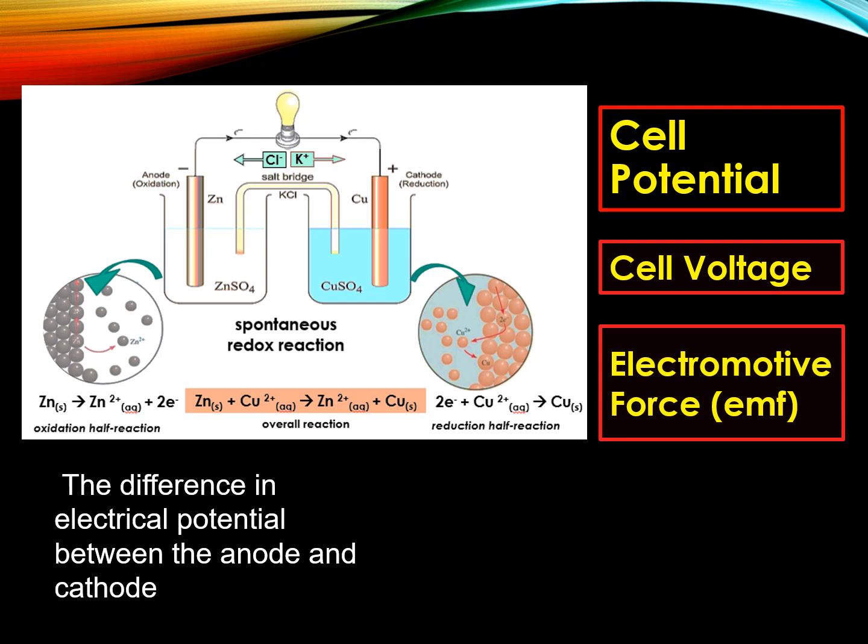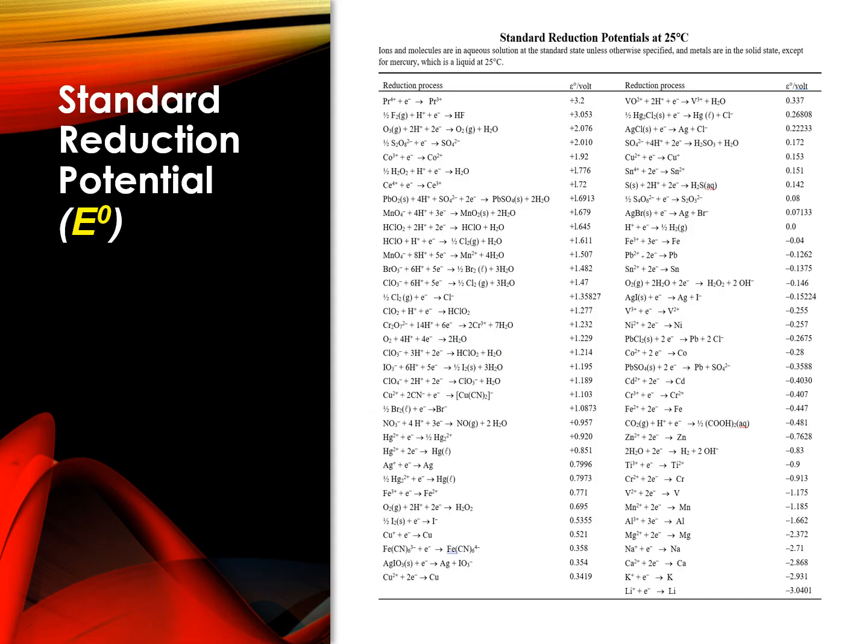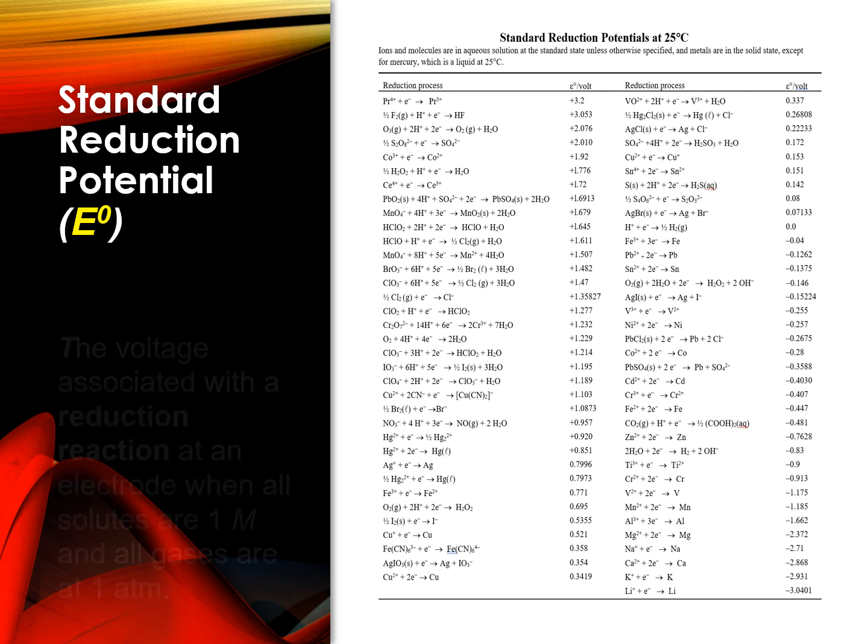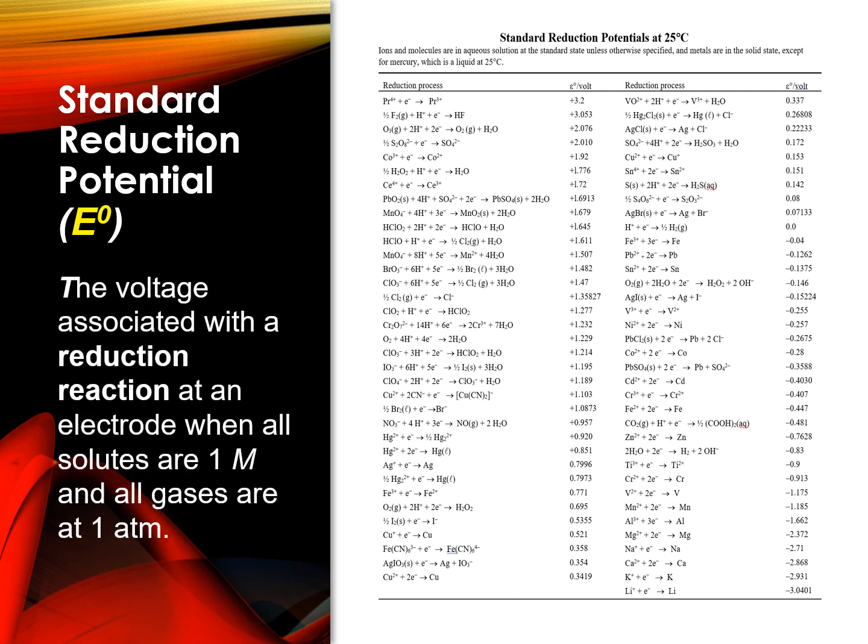To calculate the cell potential, the equation is E° of the cell equals E° of the cathode minus the E° of the anode with units in terms of volts. The standard reduction potential is denoted by E° is the voltage associated with the reduction reaction at an electrode when all solutes are one molarity or one M, and all gases are at one atmosphere or one ATM. Hence, the superscript zero denotes standard state conditions.